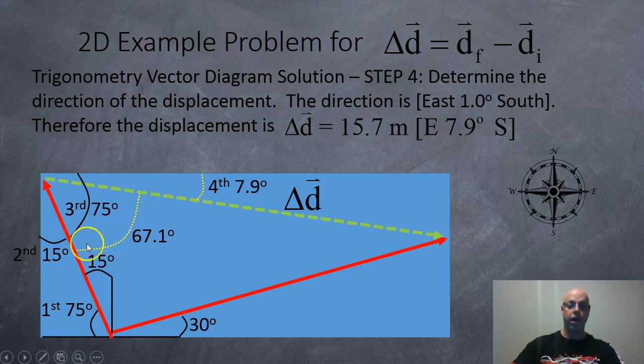Or if that's 82.1, then we know that this little smidgen of an angle here has to be 7.9. So that's a nice small angle. So facing east, coming down 7.9, and then walking 15.7 meters will get us to our final position.